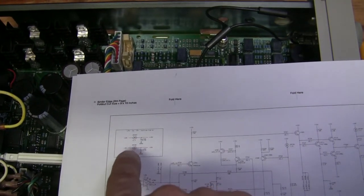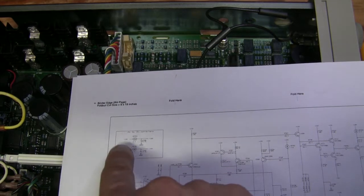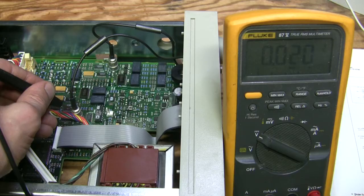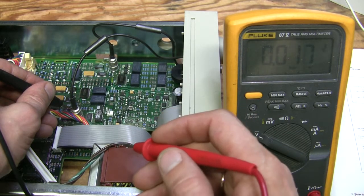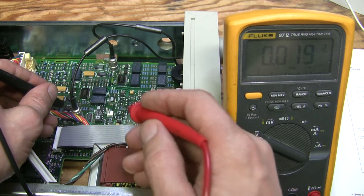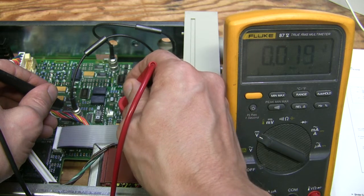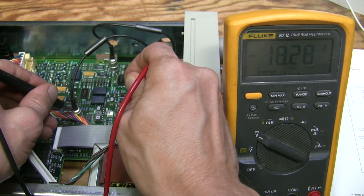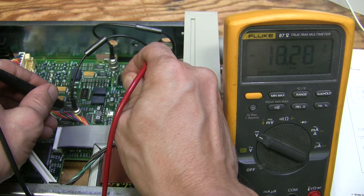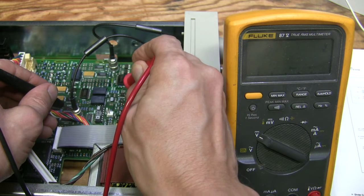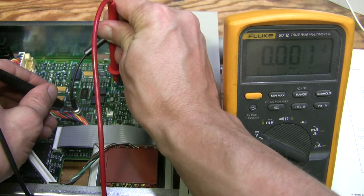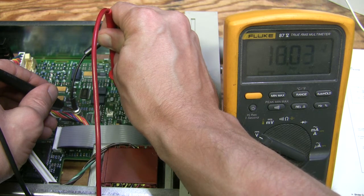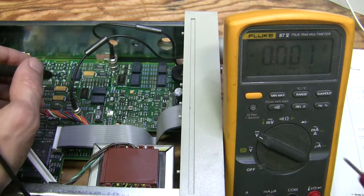I suggest to start checking these plus minus 18 volt rails. So I turned it on and I'm putting negative probe to the ground. Here is one zener diode, so I'll check this rail which is minus 18.28, looks fine. Here is another zener and on this side should be the positive rail which is almost exactly 18, so this looks fine.